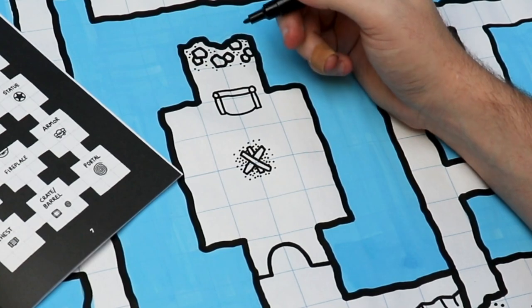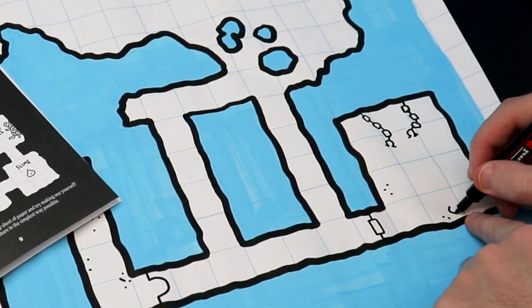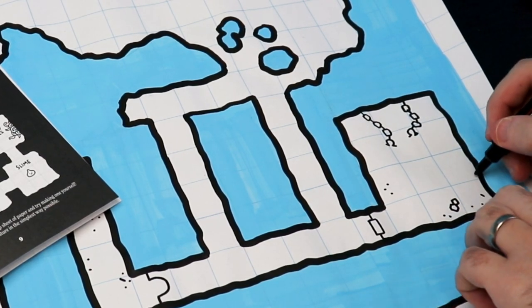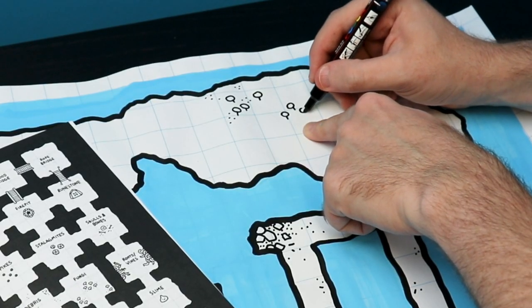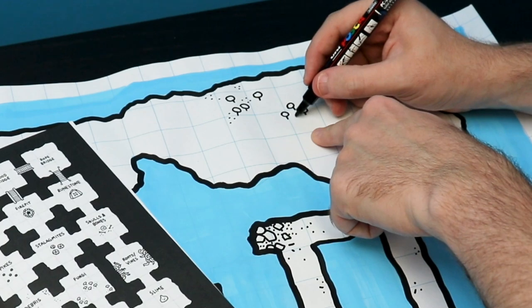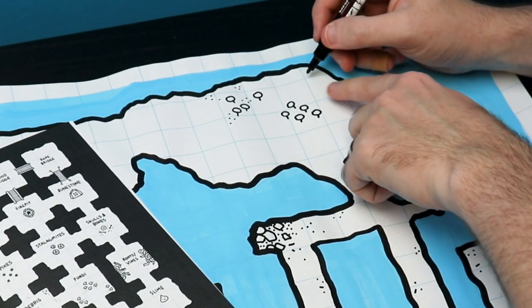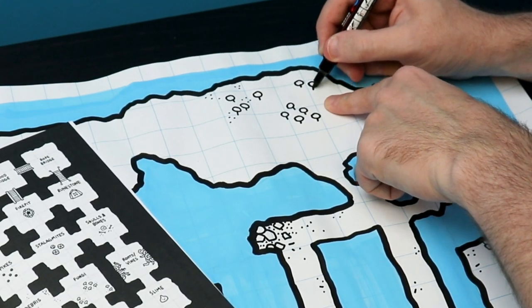These really simple little drawings go a long, long way. So just by adding these little dots all over the place, it shows that this dirty grimy sewer is filled with debris and rubble. None of the drawing in this guide is anything complicated or difficult. If you can draw a line, a dot, a circle and a rectangle, you can absolutely draw everything that I'm drawing on this map.